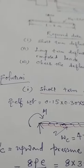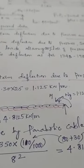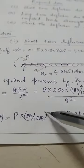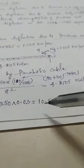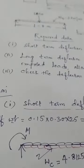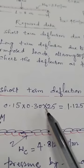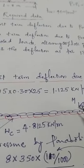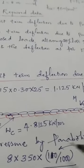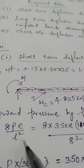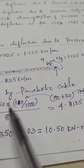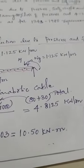The free body diagram shows all loadings. At the ends, moment M exists because of the eccentricity e2. M = P × e2 (e2 converted from mm to m by dividing by 1000), giving M = 10.50 kN·m. Self-weight is calculated as b × d × 1 m × 25 kN/m³, giving 1.125 kN/m as the downward UDL. Due to the parabolic cable profile, there is an upward UDL: Wc = 8Pe/L², where e = e1 + e2 = 110 mm, giving Wc = 4.8125 kN/m.